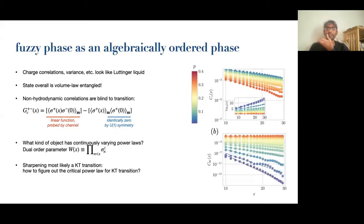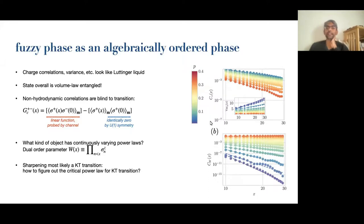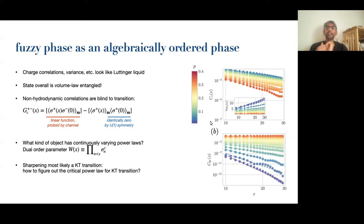It turns out there is a clever duality trick that allows you to find an object with these parallel correlators — that's the string order parameter. The key thing is that if you get continuously varying exponents from the string order parameter, or equivalently take the coefficient of the logarithm in the charge variance seriously, you can ask: here's a Luttinger liquid — what kind of transitions can it undergo? The only natural thing to have happen is a Kosterlitz-Thouless transition. So we'd like to figure out where the Kosterlitz-Thouless transition is and what's causing it, and to do that we need to do considerably more work using the stat-mech model.